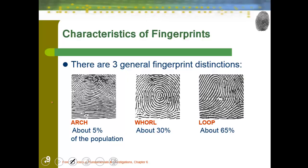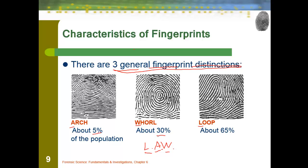It's going to be key that we can look at three general fingerprint distinctions. What we're going to look at today is the arch, whorl, and loop — or you can remember them as LAW: loop, arch, and whorl. Population breakdown: about 5% have arch, about 30% have whorl, and about 65% of the population — the most common — have the loop.